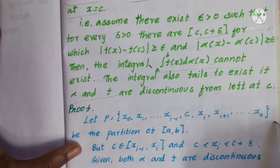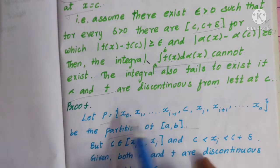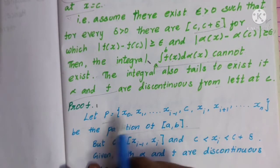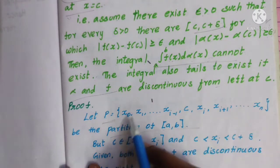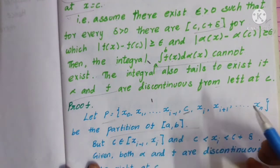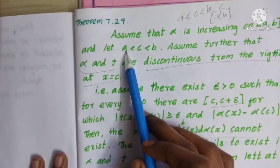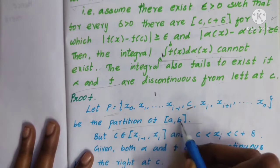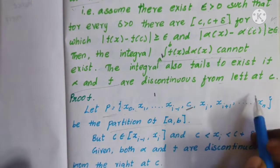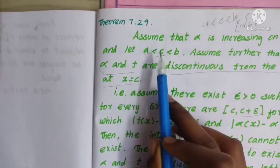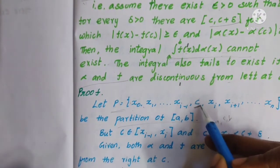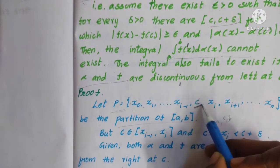Now let's go to the proof. Let P be a partition — a set of points of the closed interval [a, b]. If we look at all x terms, we will see c. Since a < c < b, the points are a and b, and c is an element in between a and b. So c is a point in the partition.